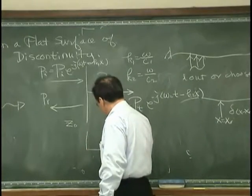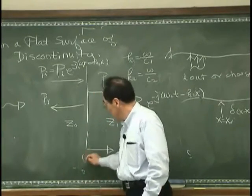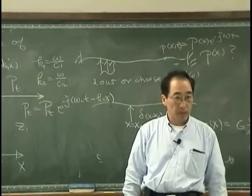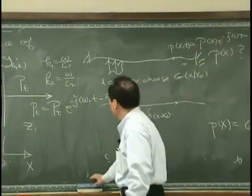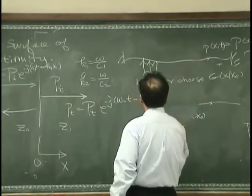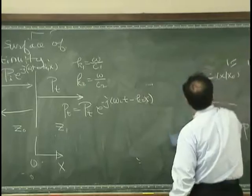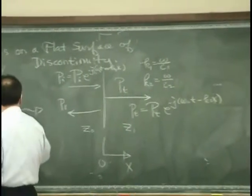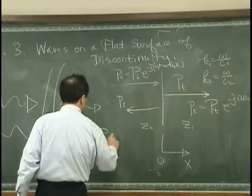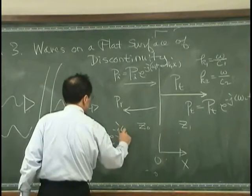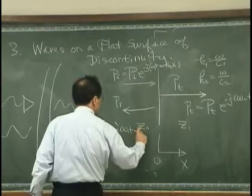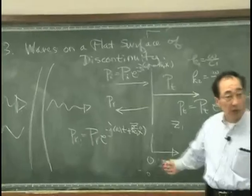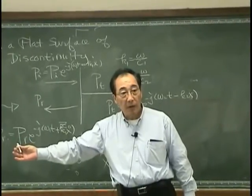And this is x, and this is 0. Then, of course, I can always write the PR as magnitude plus k1x, right? Because this is a left-going wave.